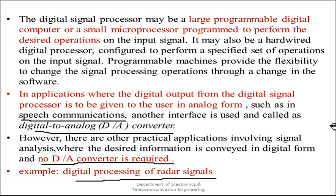In the next section we will see the process of converting a discrete-time, continuous-amplitude signal into a digital signal by expressing each sample value as a finite number of digits — this operation is called quantization. In the next lecture we will cover what quantization is, how to deal with quantization error, and the number of steps used to formulate the conversion. Thank you everyone.